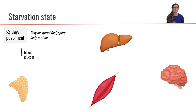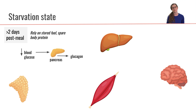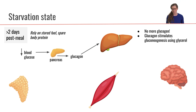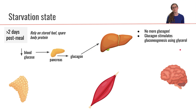At the beginning of this pathway, our blood glucose concentration has started to decrease. That stimulates the pancreas to release glucagon, which is going to stimulate the liver. However, the liver has no more glycogen, so we can't rely on glycogen to increase our blood glucose concentration. Glucagon is still going to stimulate gluconeogenesis.